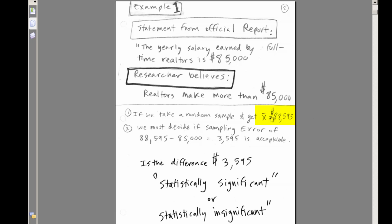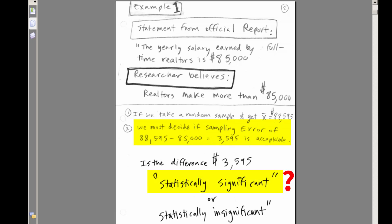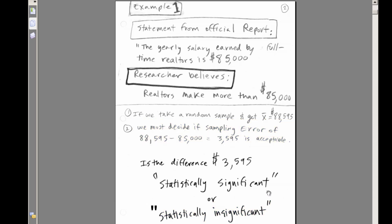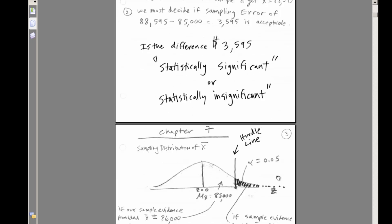If our sample shows $88,000, we can't just say it's bigger because this is a sample. We must decide if the sampling error of the difference — that's $3,595 — is statistically significant or statistically insignificant. The good news is we already have all of the statistical and Excel techniques, formulas, and functions from earlier chapters.